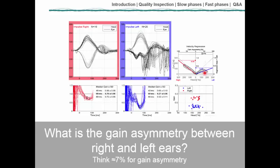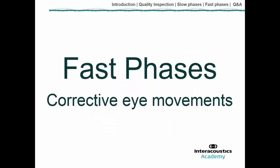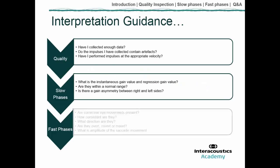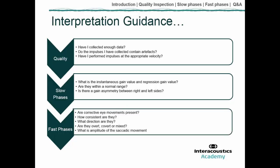After examining slow phase responses, we also need to look at fast phase corrective eye movements. The key questions are: are saccadic eye movements present, how consistent are they, what direction are they occurring, and are they overt, covert, or mixed? You can also note the amplitude of the saccadic movement, as this provides additional information.